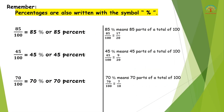Percentages are written with the symbol % (a slash with two dots on either side). So 85/100 is written as 85% or 'eighty-five per cent' in verbal form. 45/100 is written as 45% or 'forty-five per cent'. 70/100 is written as 70% or 'seventy per cent'. Now, 85% means 85 parts of a total of 100; 45% means 45 parts of 100; and 70% means 70 parts of 100.